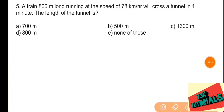Problem number five: a train 800 meters long running at the speed of 78 kilometers per hour crosses a tunnel in one minute. The length of the tunnel is to be found. The train is 800 meters long and crosses the tunnel at 78 kilometers per hour in one minute (60 seconds).